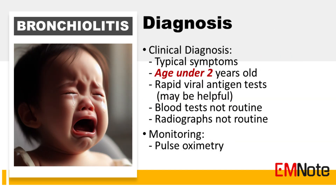Diagnosis of Bronchiolitis. Clinical diagnosis is suspected by history of typical symptoms in children under 2 years of age. Though rapid viral antigen tests may be helpful, routine blood tests and routine radiographs are not necessary. Monitoring oxygen saturation with pulse oximetry is important for severity assessment.